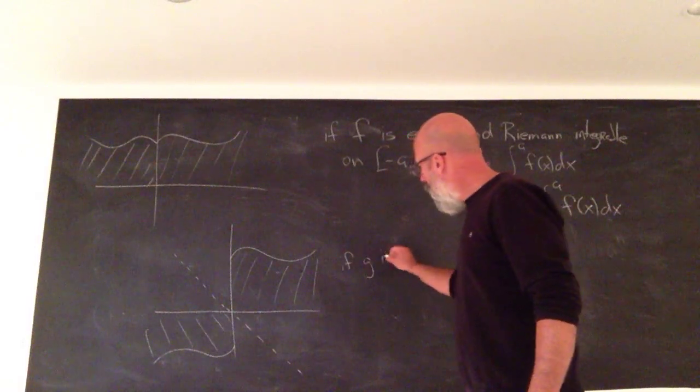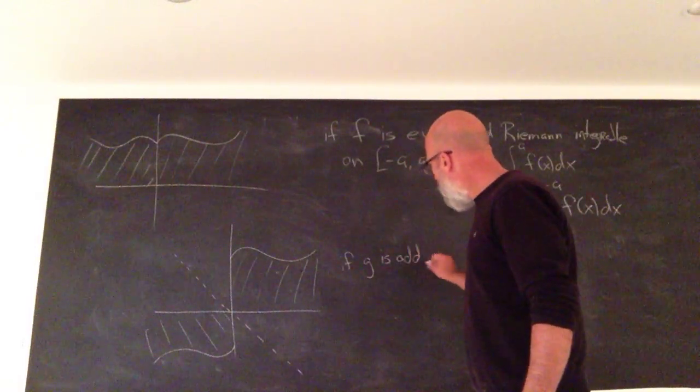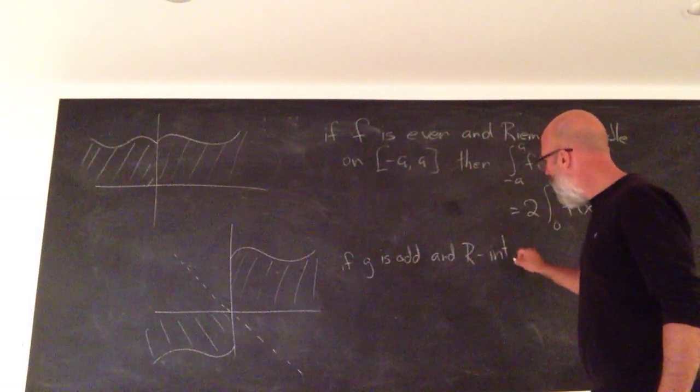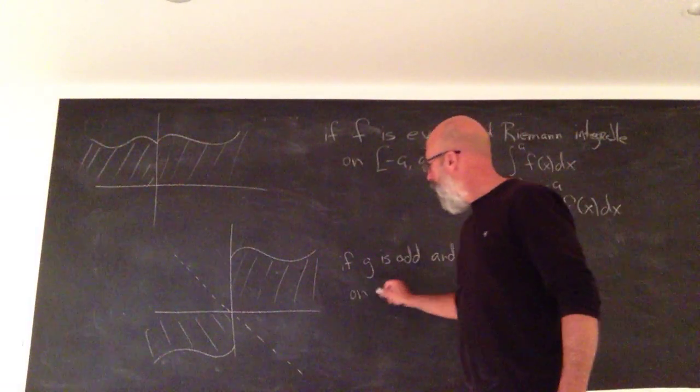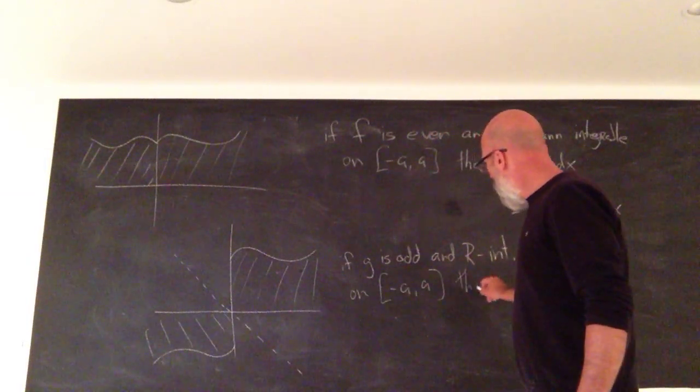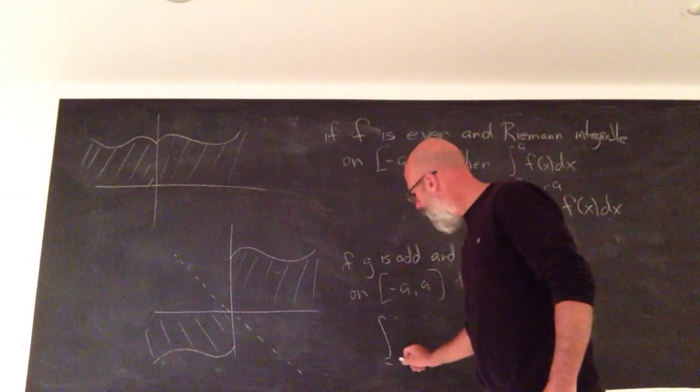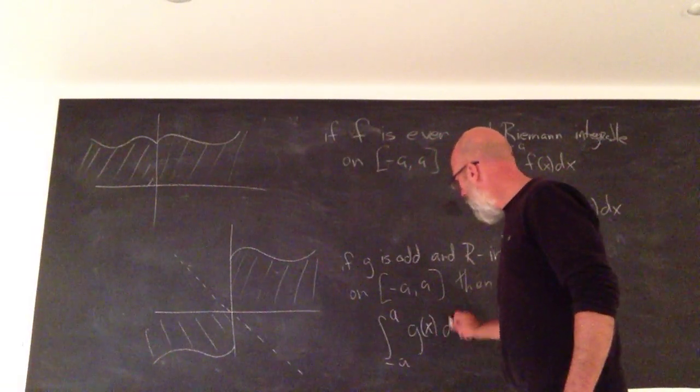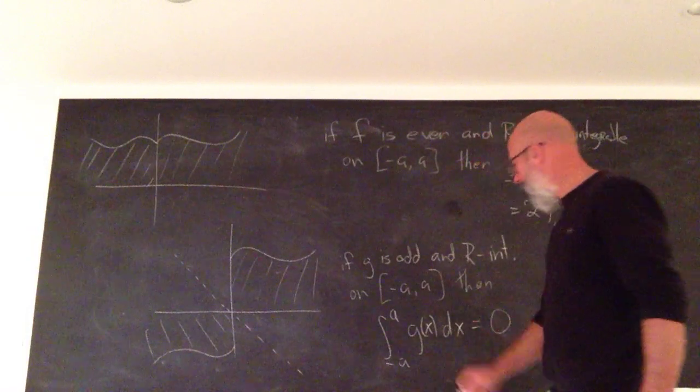If G is odd and Riemann integrable on the interval negative A to A, then the integral of G is 0.